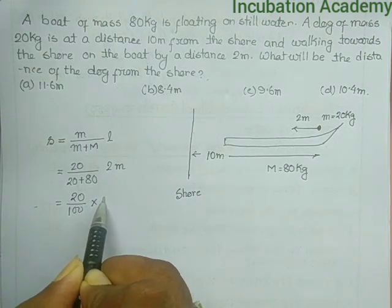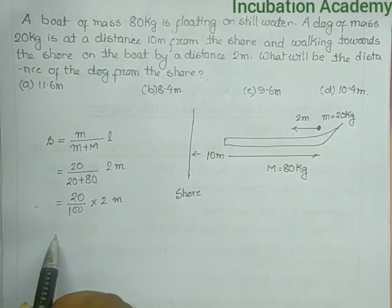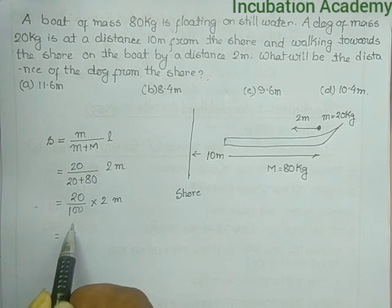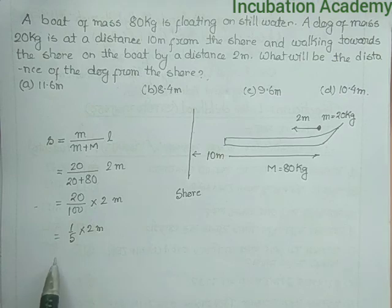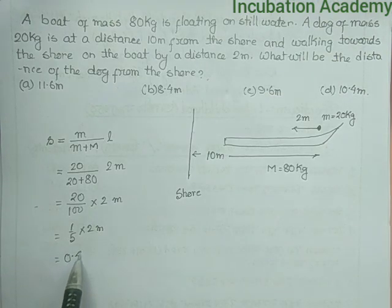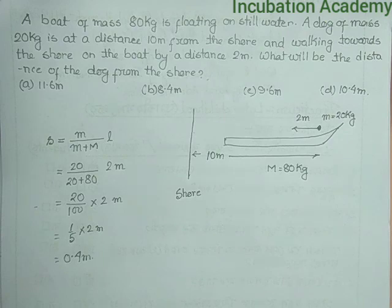Multiplied by 2 meters, so it will be 1/5 times 2 meters, which equals 0.4 meters.